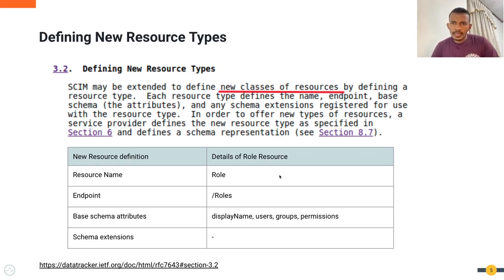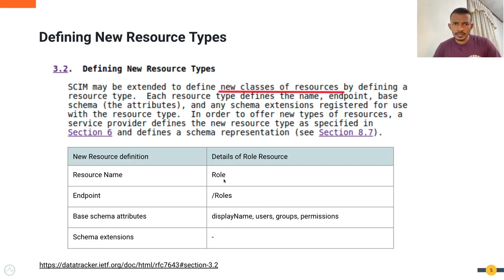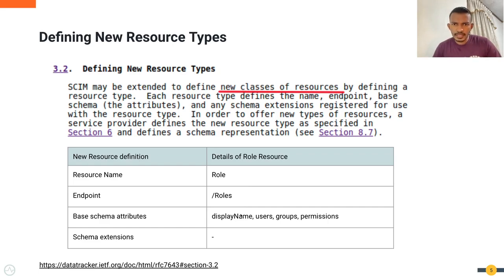These are the details of the roles resource type introduced in WSO2 Identity Server 5.11. The resource name is 'role', the API endpoint is defined as 'roles/roles' — which is the plural noun of the resource name. There are four base schema attributes: display name, users, groups, and permissions.